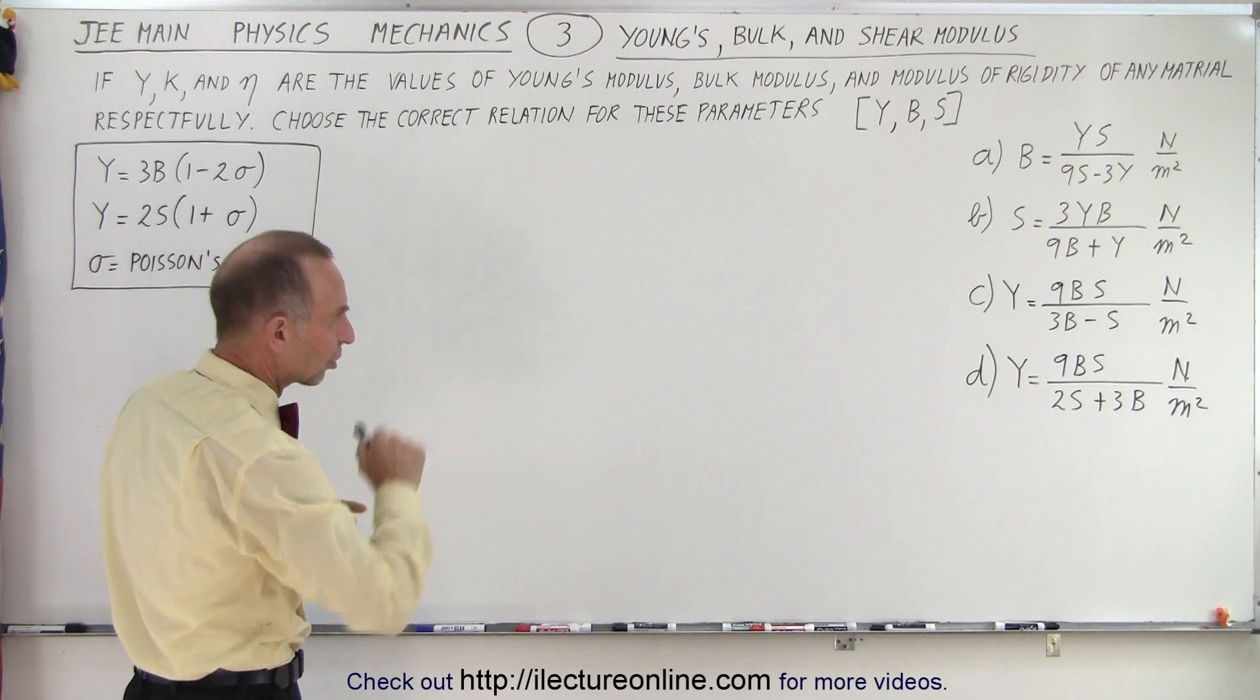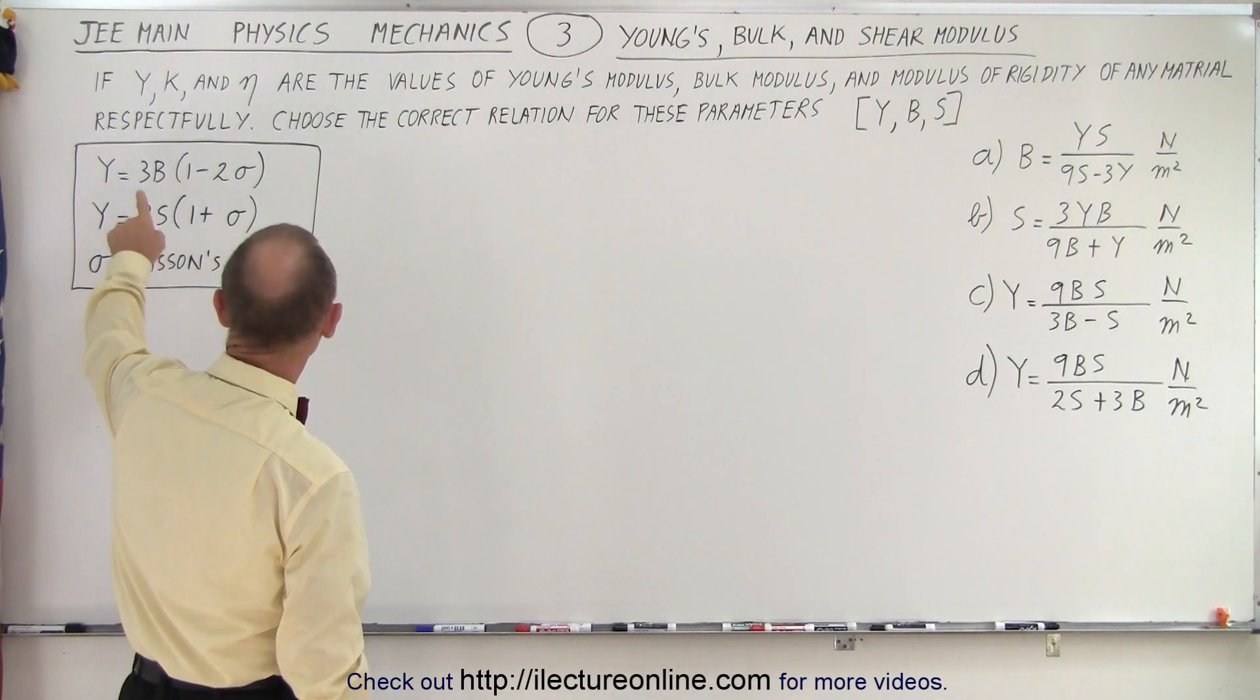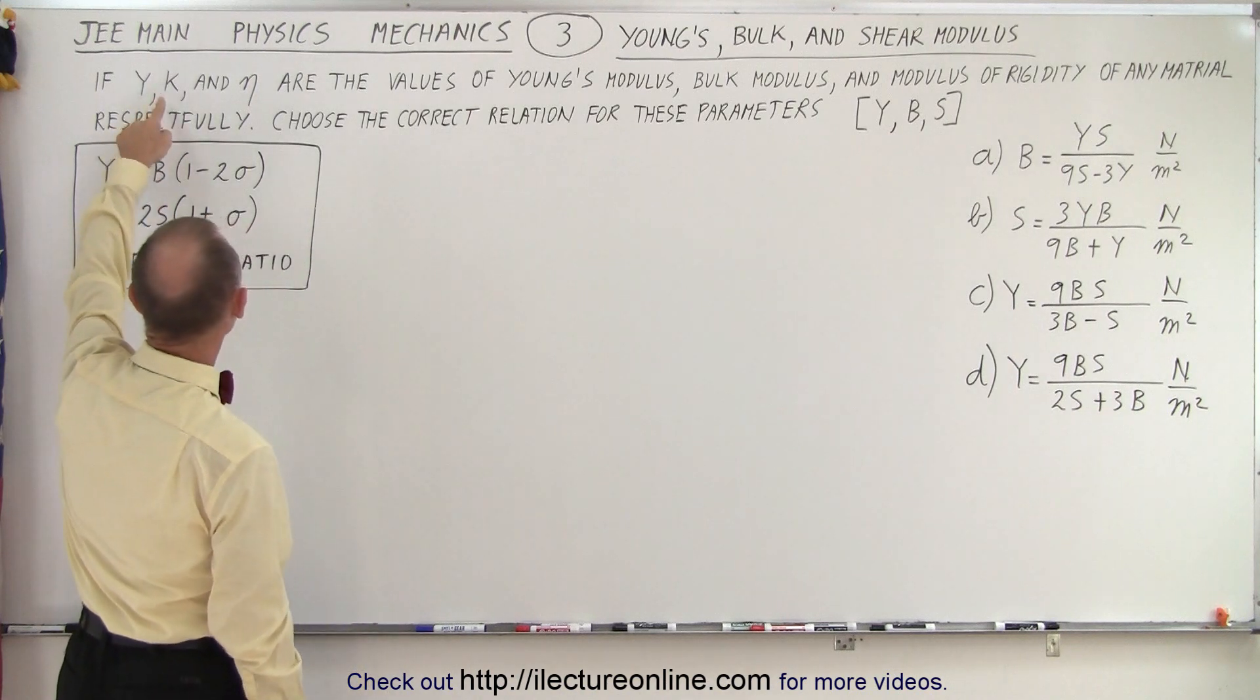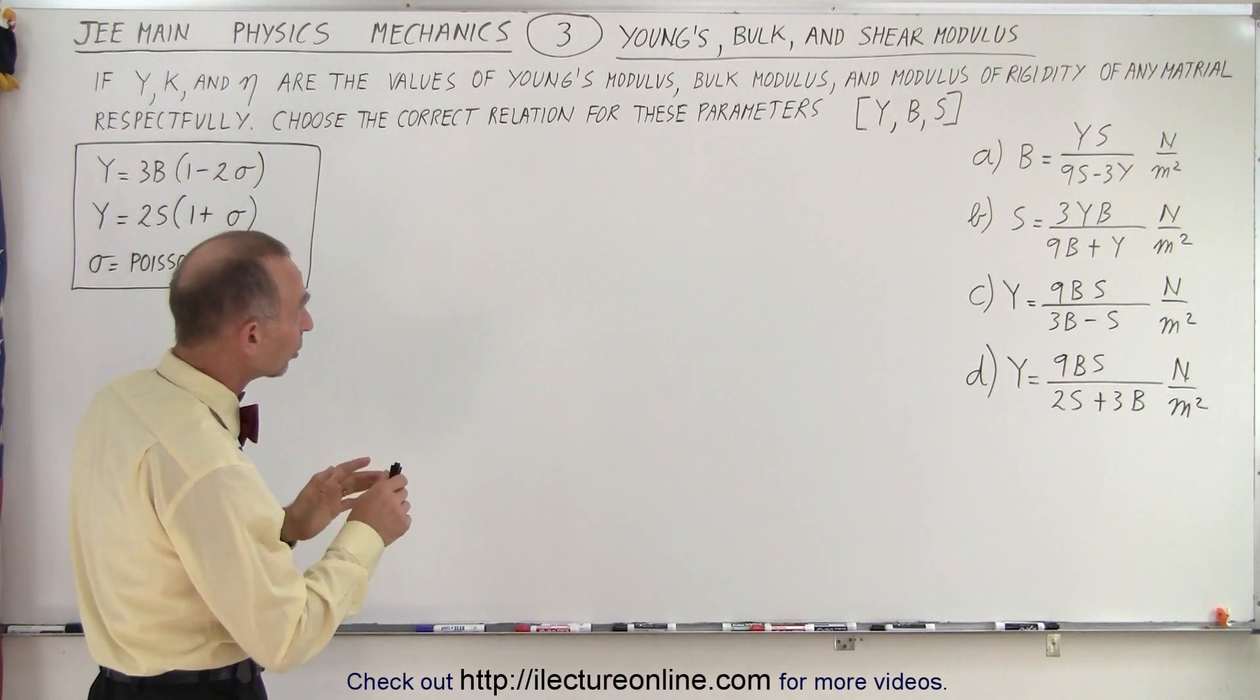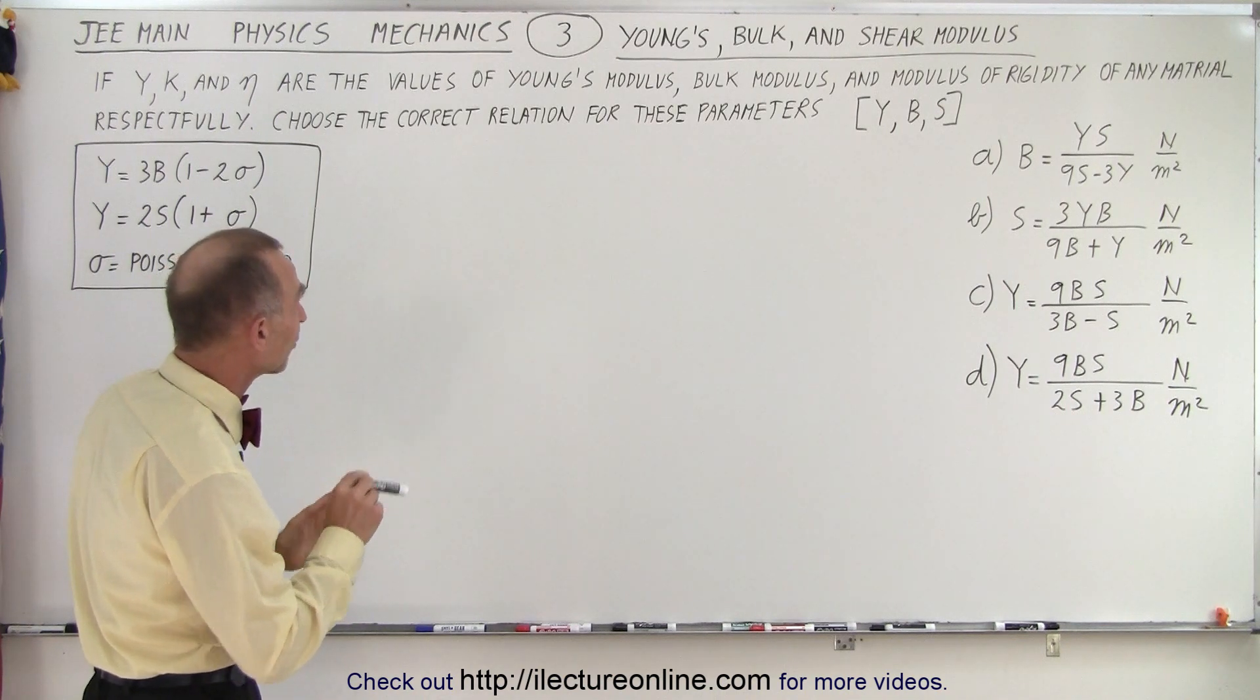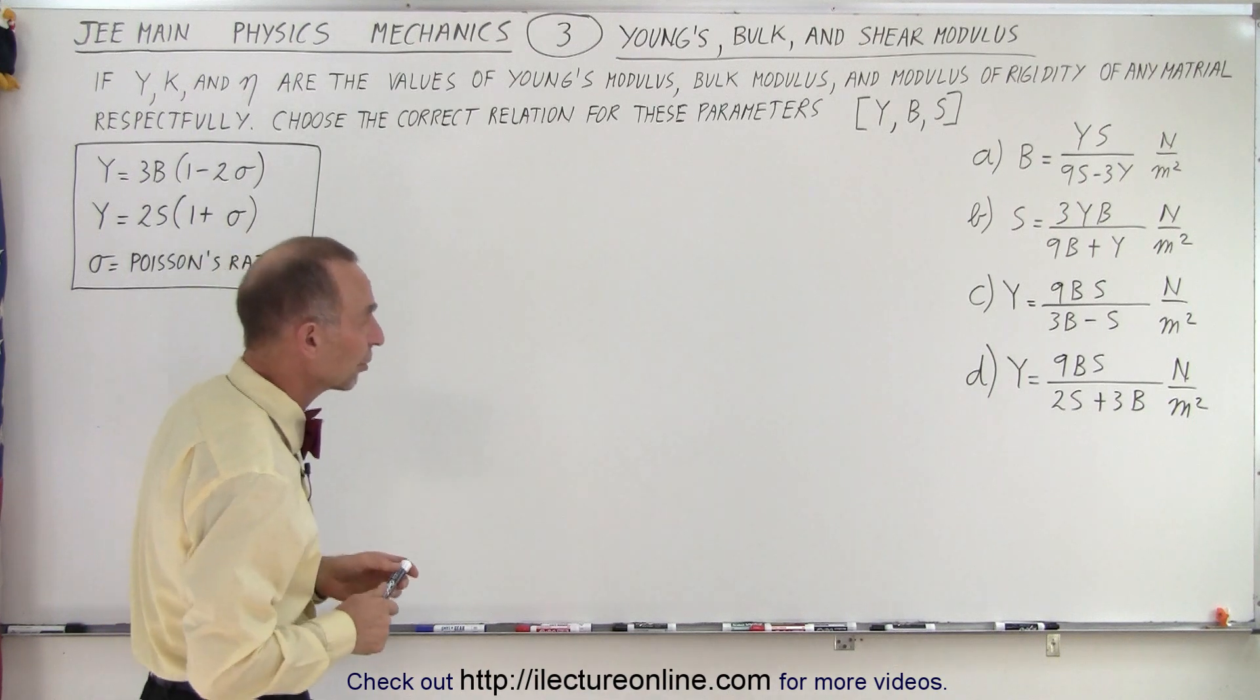So without going into those details, here let's read the question, let's look at the answers, and then let's figure out the strategy of how to do this. So it says, if Y, K, and nu are the values of Young's modulus, bulk modulus, and the modulus of rigidity of any material respectfully, choose the correct relation for these parameters.